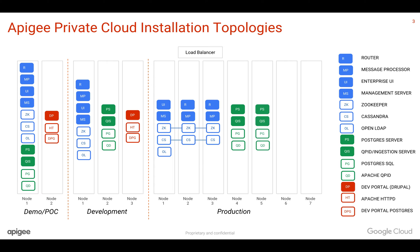On the fourth node and fifth node you will install analytics — even if one machine goes completely down, you have the other machine taking the traffic. Similarly, on the sixth node and seventh node you will have the developer portal, which is used to onboard your developers. That's how the production deployment of Apigee looks, with multiple redundant components for high availability and scalability.